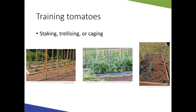Different ways to train tomatoes include staking, caging, and trellising. With staking, you put a wooden post — about 7 feet tall, driven 1 foot into the ground, about 4 inches from the plant — and tie the tomatoes to the stake using soft cloth in a figure-eight pattern. When staking, you typically select one main stem and prune off all suckers.